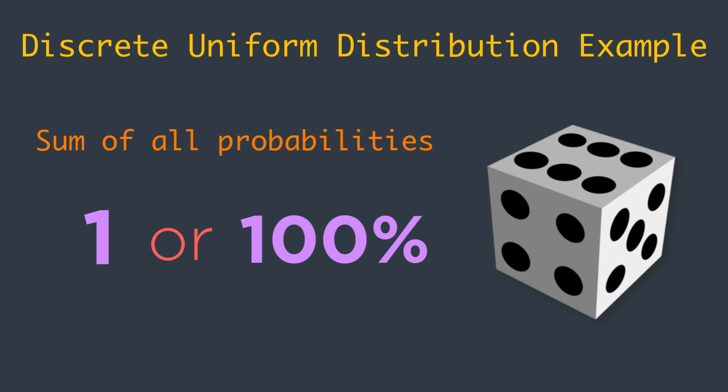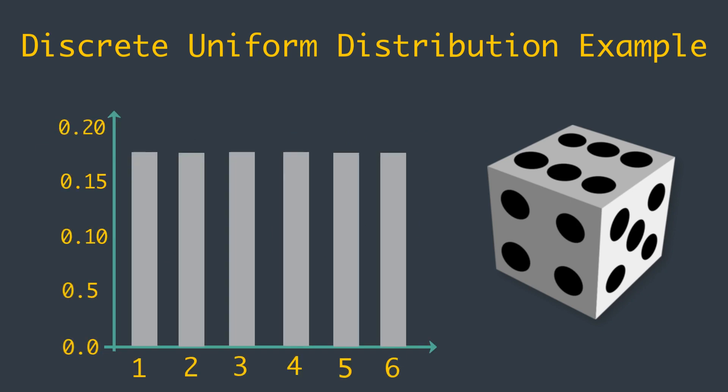By the way, it is called a discrete uniform distribution. All outcomes have an equal chance of occurring. Each probability distribution has a visual representation. It is a graph describing the likelihood of occurrence of every event. Here you can see the graph for our example.